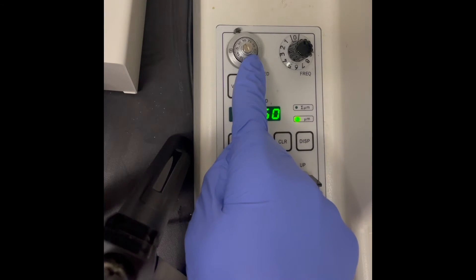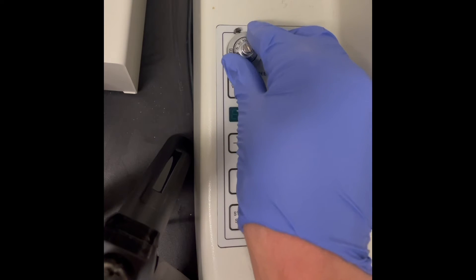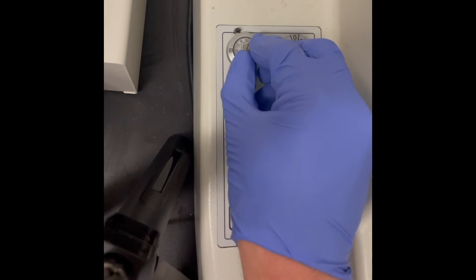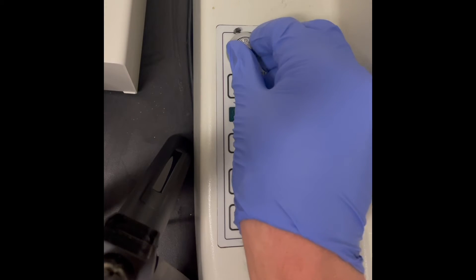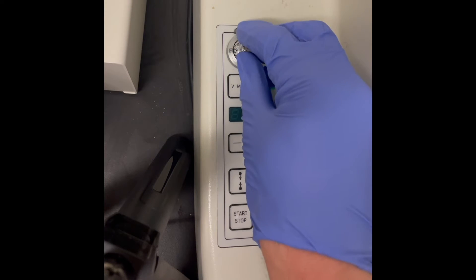To change the speed at which the blade advances, twist the knob in the top left corner, which has settings between 0 and 8. Optimal speed for sectioning is tissue dependent, but it is typically in the range of 2 to 5.